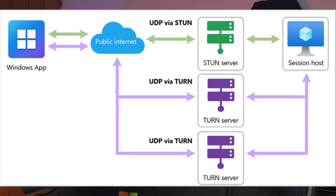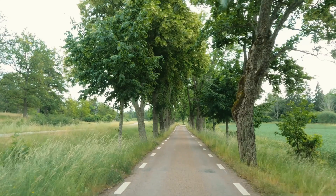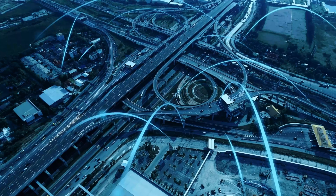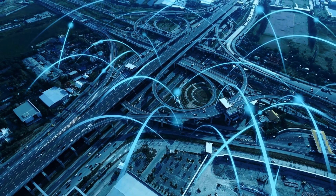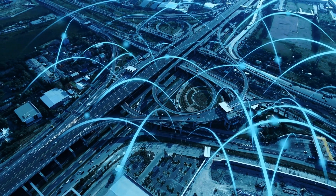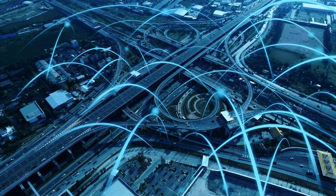RDP Multipath lets your session use multiple network paths at the same time. It automatically balances the traffic, and if one path fails, your session keeps going — no dropouts, no disconnections, no stress. Think of it like turning a narrow road into a smart multi-lane highway for your AVD and Windows 365 traffic. Smoother, faster, and way more reliable.